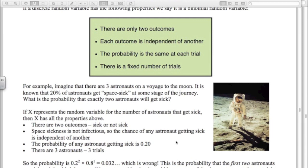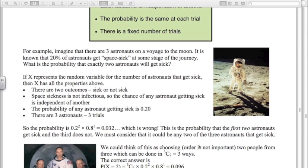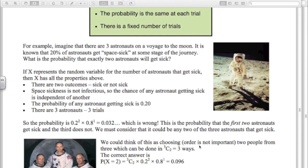So the probability is two astronauts getting sick and one being okay is 0.2 squared times 0.8, which is wrong. That would be the probability of the first two astronauts getting sick and the third not. But we've also got to think about, well, it could be the first and third astronauts who get sick and the second one's okay. In fact, there's three ways we could look at it. So our answer is really three times the number above there, or three choose two times our number that we got before.